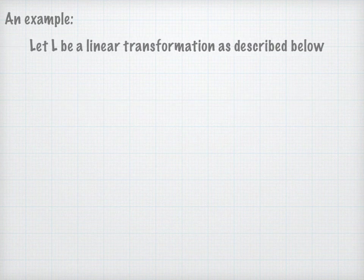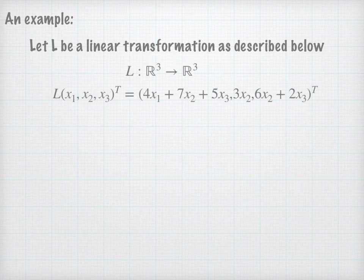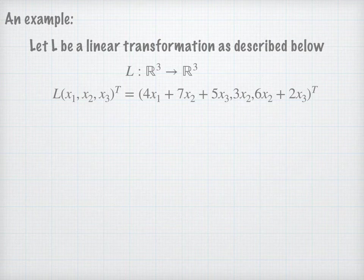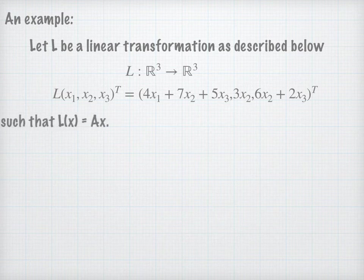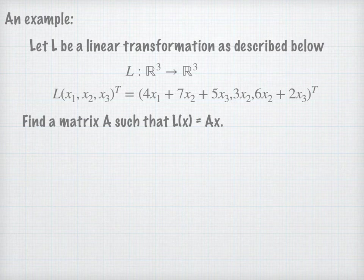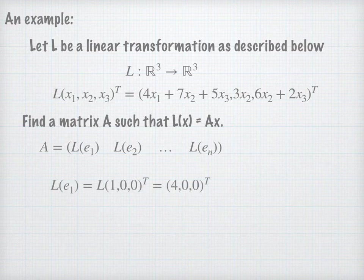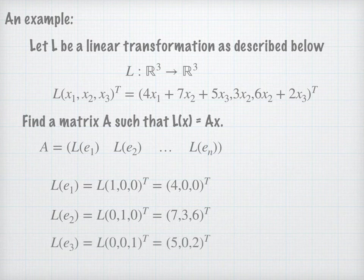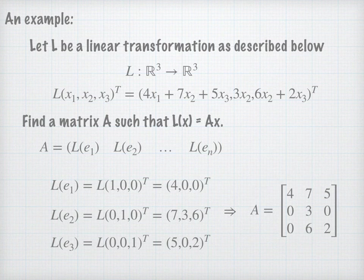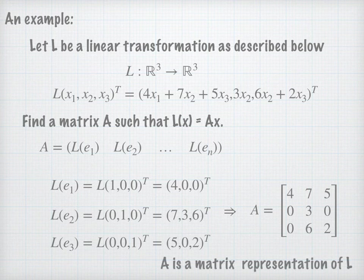Let's look at an example. Let L be a linear transformation from R3 to R3 described as follows: applying a vector in R3 to L gives 4x1 + 7x2 + 5x3 as the first coordinate, 3x2 as the second coordinate, and 6x2 + 2x3 as the third coordinate. We want to find matrix A such that Lx = Ax. Using the standard basis: L(e1) gives the column (4, 1, 0), L(e2) gives (7, 3, 6), and L(e3) gives (5, 0, 2). From these calculations, we get matrix A, the matrix representation for this linear transformation with respect to the standard basis.